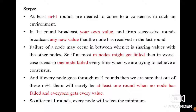If every node goes through m plus one rounds, we can ensure that in at least one round all nodes are in failure-free operation and every node receives every value. After m plus one rounds, every node selects the minimum value — this is how agreement is reached. To summarize: each node runs m plus one rounds, broadcasting its own value in round one, then broadcasting newly received values in subsequent rounds.